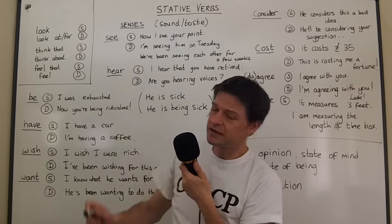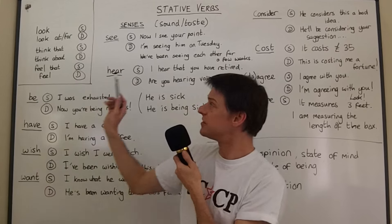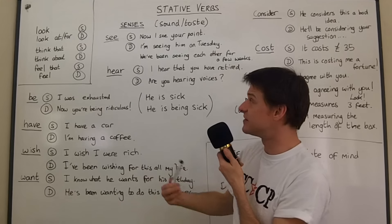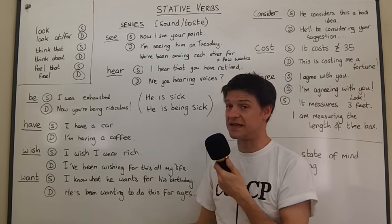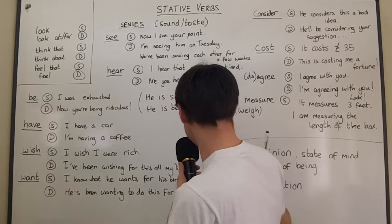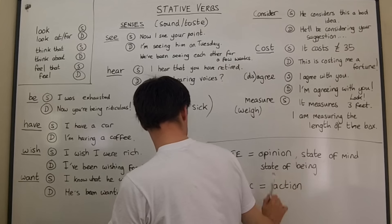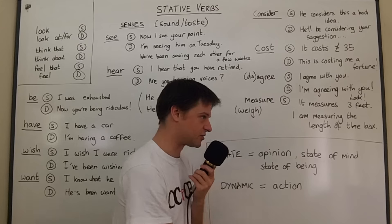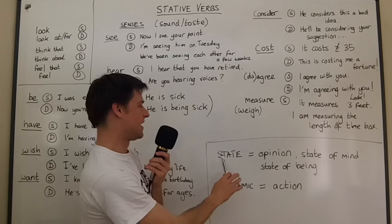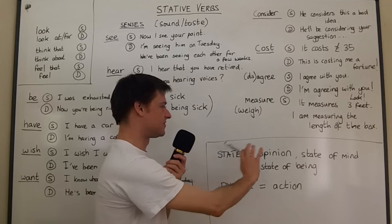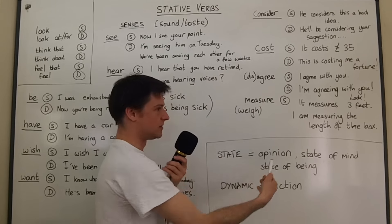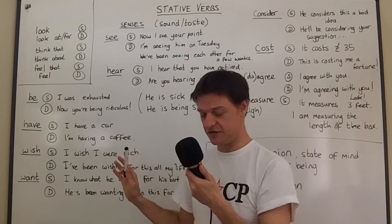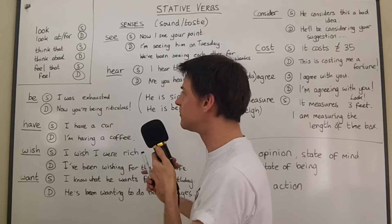It should get easier and easier to see that this is very similar to simple and continuous. Continuous is always when you're in the middle of an action, and simple is something that's always true. Well, a state is always true — so it's a pretty similar kind of logic.